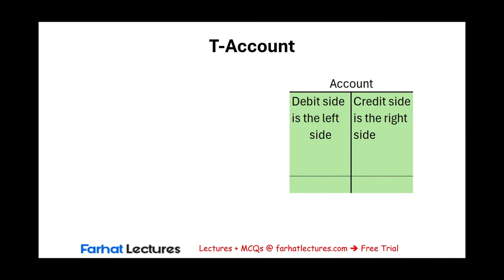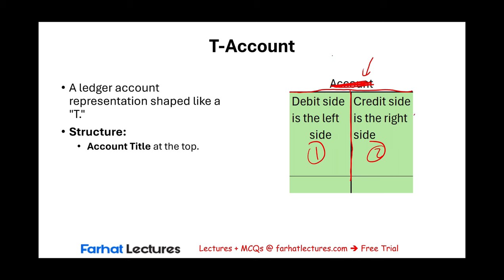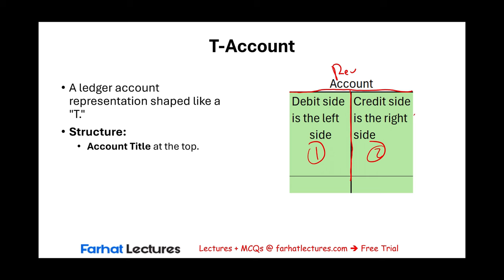Let's start by physically inspecting a T-account. A T-account looks like a capital T — it has two sides. It has an account title at the top, and that account title takes the place of an account, like cash. Other accounts include supplies, accounts receivable — those are all assets. Liabilities include accounts payable, unearned revenue. Then we have revenues and expenses. Each account will have a T-account, or a general ledger account.